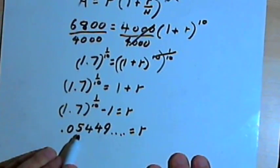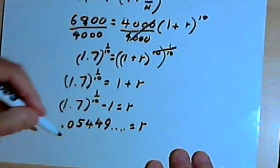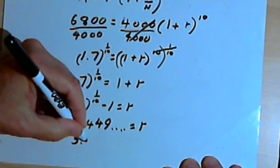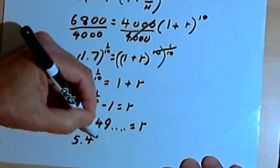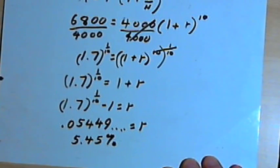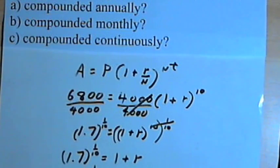So we probably want to round this and turn it into a percent. So I'll multiply it by 100, that will give me 5.45%, and I'll round it to 5.45%. So the answer to the first part of the problem is we would have to invest this money at 5.45%.